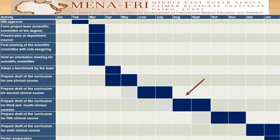Presenting a plan to the departmental councils of both departments was also done. Conducting the first meeting of the scientific committee with role assigning — we accomplished that as well. We actually had to hold many meetings to agree on all the roles and what should be done. Holding an orientation meeting for the scientific committee — we did that as well.